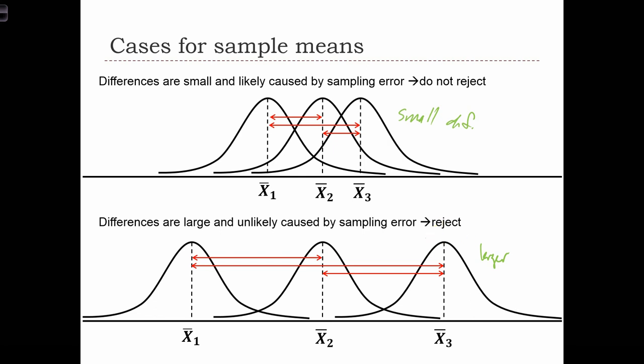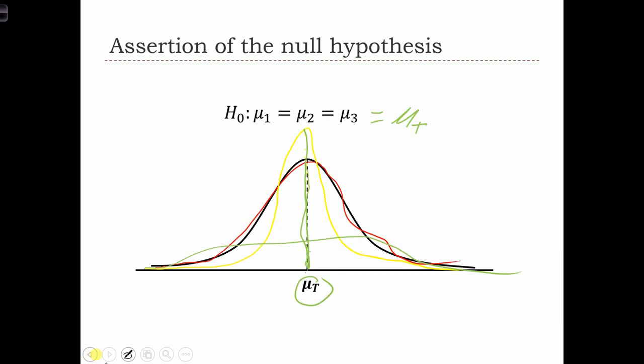And why am I talking about sampling error here? So I say differences are small and likely caused by sampling error. Well, if the null hypothesis is true, so if we have the case over here where the three samples all have the same mean in the population, it's still possible that when we go out and take our three samples and calculate our sample means, x1 bar, x2 bar, and x3 bar, because of sampling error,